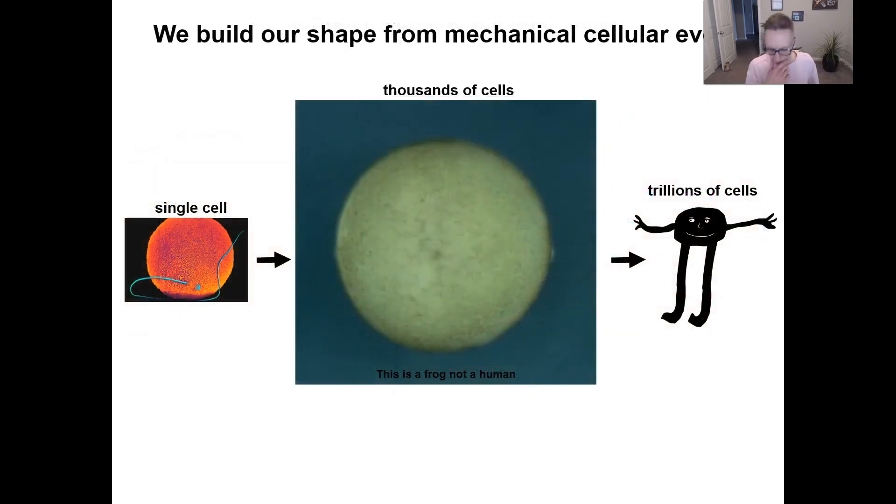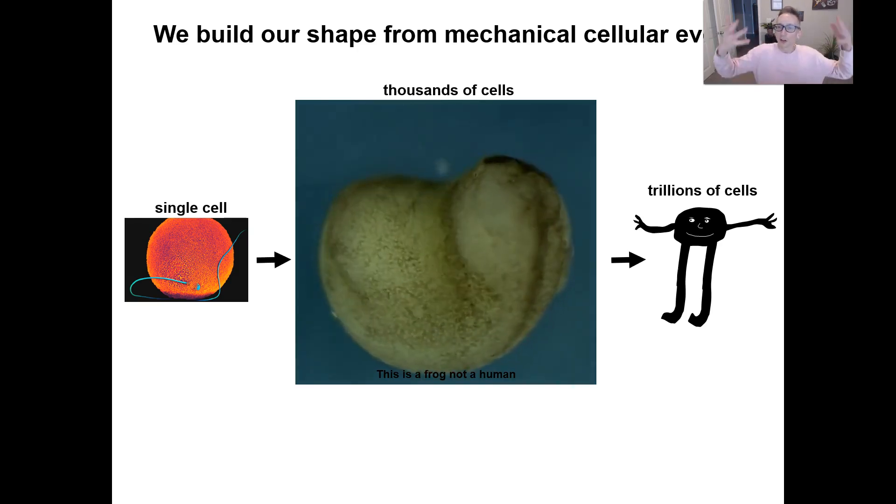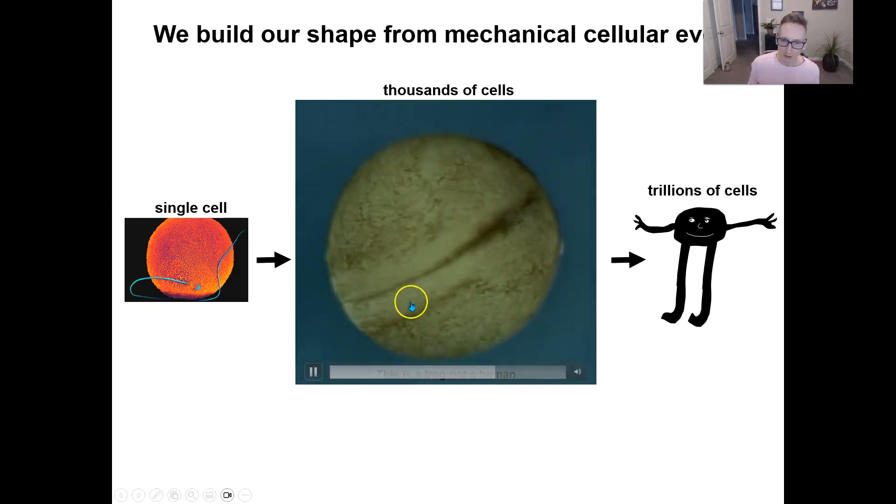So we all started off as a single cell when the sperm fused with an egg. That made us. Every single one of us has that in common. We all started off as a single cell. And then through that process of mechanical changes in that cell, cutting it into two, changing shapes, cutting those, changing shapes, cutting those, we can start to develop into our three-dimensional shape. So these tiny little cellular forces sculpt us into the beings that we are.